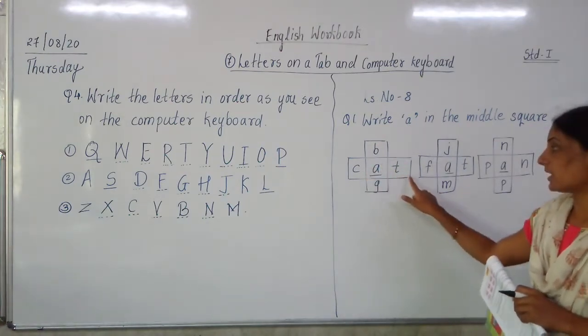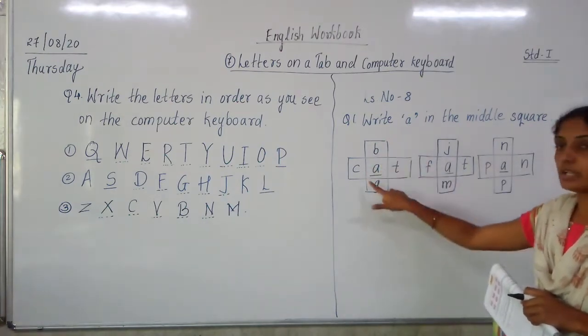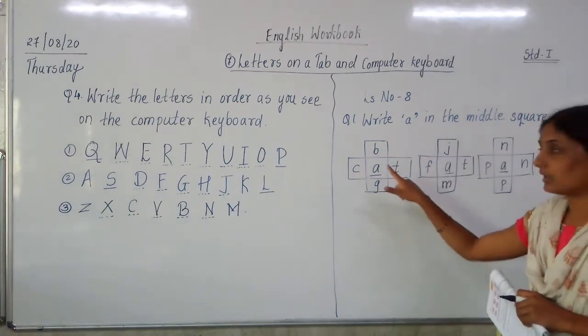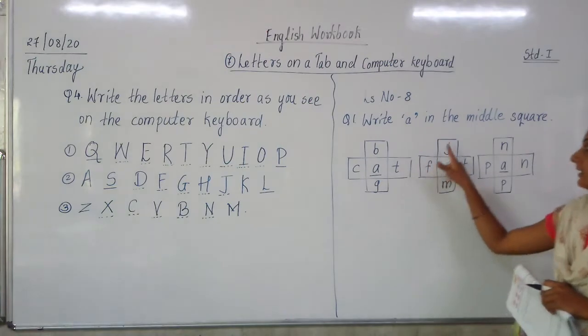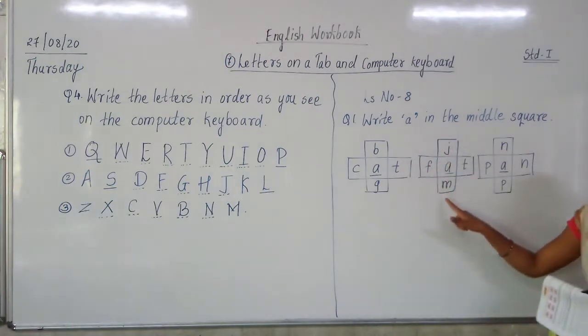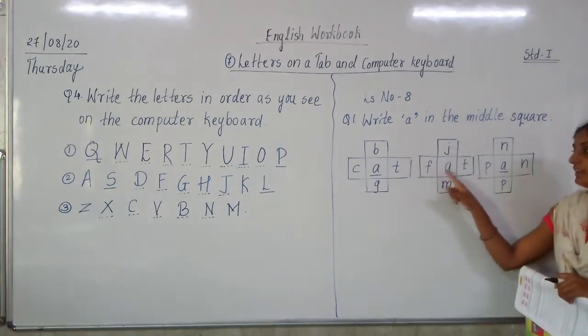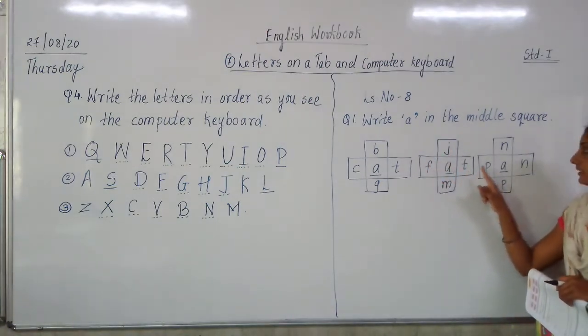So what words are formed? Vertically and horizontally: B-A-T, C-A-T, K. Then J-A-M, J-A-N. F-A-T, F-A-N, F-A-P.